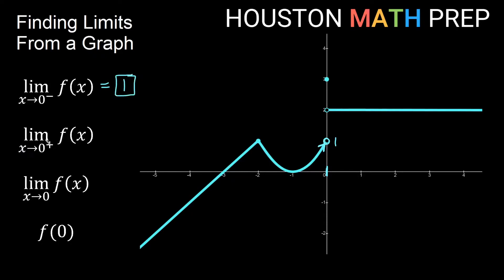If we look at the limit from the positive side of 0, from the right side, then I'd be approaching on this line, which is heading to a y value of positive 2. Even though it's not defined at these points, we know exactly what y value we're heading to — that open hole is at y equals 2. Since we get different limits from the left and right, this overall limit as x approaches 0 does not exist.